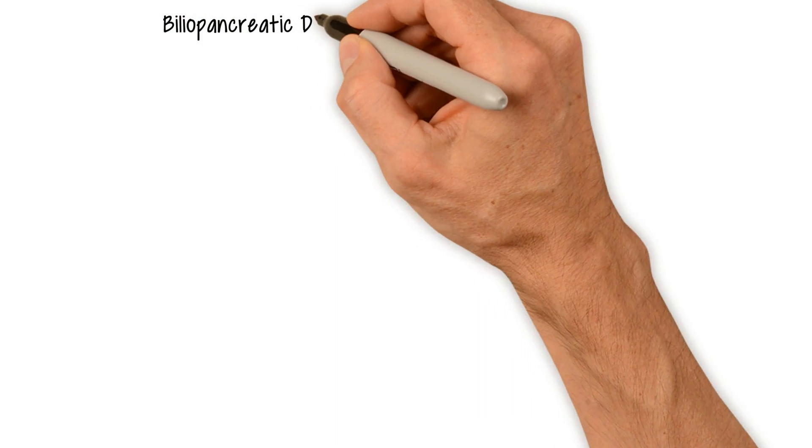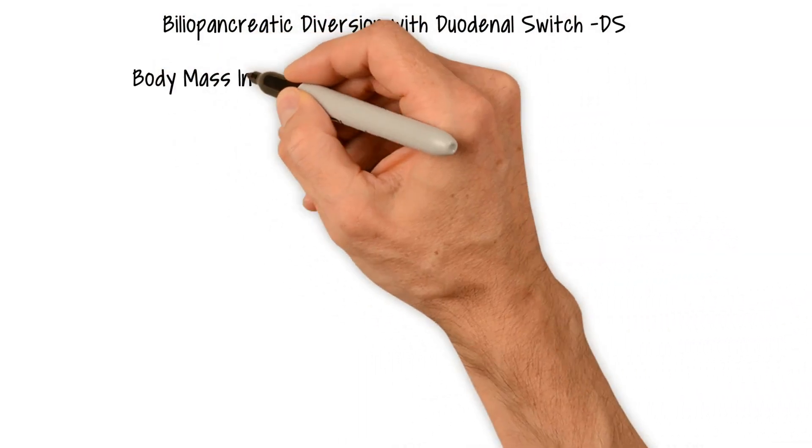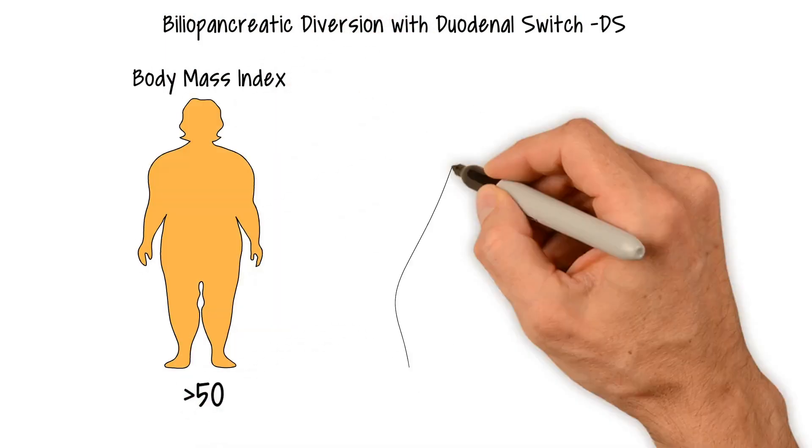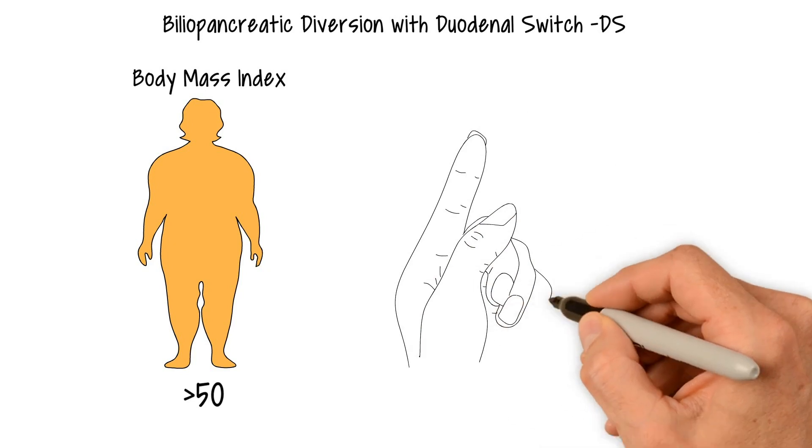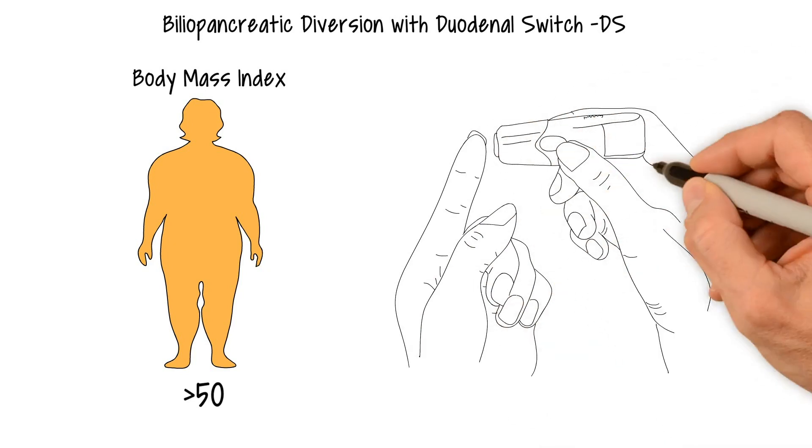The duodenal switch, also known as the biliopancreatic diversion or more simply DS, can be more successful for patients who have particularly severe obesity with a body mass index (BMI) of 50 or higher, or a BMI of 40 along with severe diabetes.